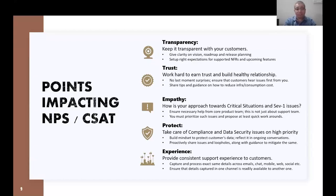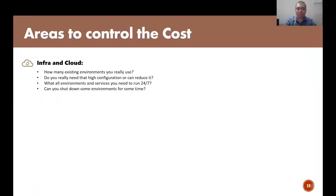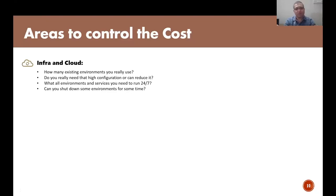If you take care of these parameters, your NPS and CSAT will definitely go higher. Moving to the next one — cost. What are the parameters that can impact your cost? One area is infrastructure and cloud. How many environments do you have currently, and do you really need all of them? Can you bring down the configuration of some environments to bring down the cost? Does your team really use all environments and services 24 by 7? If not, can you stop them for part of the time or shut down some environments? I tried that and could bring down 30 to 40% of environmental cost month after month.